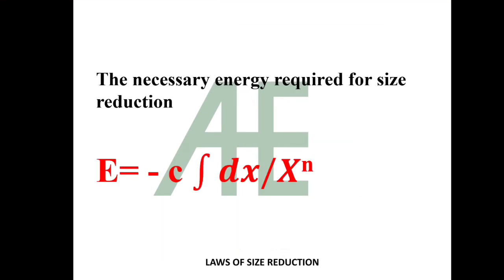The necessary energy required for size reduction is given by one empirical formula which is E equals minus c integration of one upon x raised to n into dx, where E is energy requirement, c is some constant, x is the size of field or product, and n is some factor.